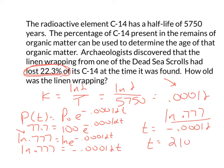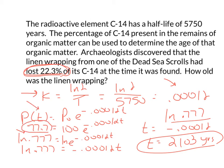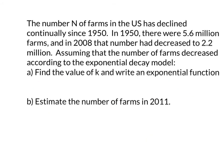To get t, I divide the natural log of 0.777 by negative 0.00012, and I get approximately 2,103 years. That's how old the wrapping is — about 2,100 years old. So: find your decay rate first, then plug into the formula. The right-hand side is always what's left.